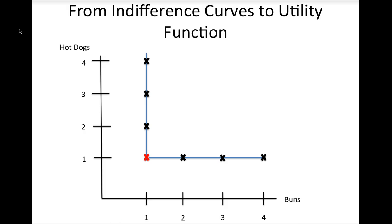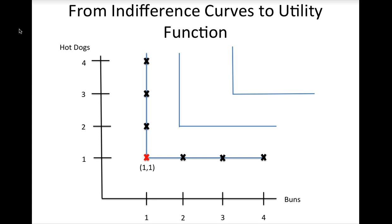Let's do one more example of how to find a utility function from a graph of indifference curves — the case of goods that are perfect complements, such as hot dogs and buns. From this graph, you can see that this consumer's ideal consumption ratio of hot dogs to buns is 1 to 1, since the corner of the indifference curve is located at 1 bun and 1 hot dog. There is another indifference curve with a corner at 2 hot dogs and 2 buns, and another at 3 hot dogs and 3 buns, and so on. We start by assigning a utility value to each indifference curve: utility of 1 to the first, 2 to the second, and 3 to the third.